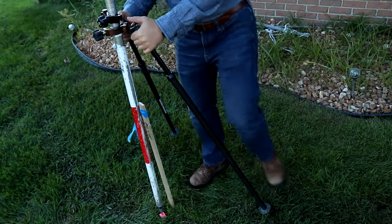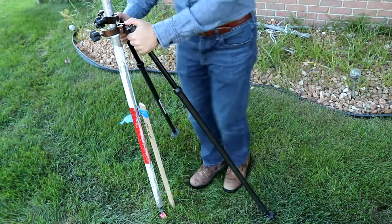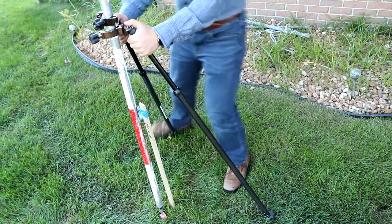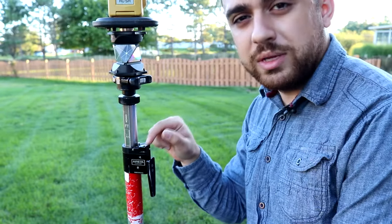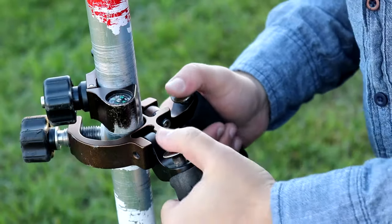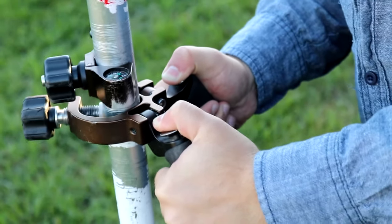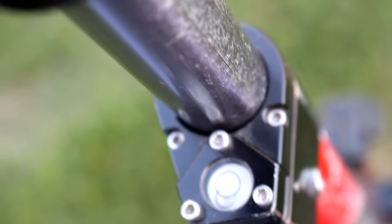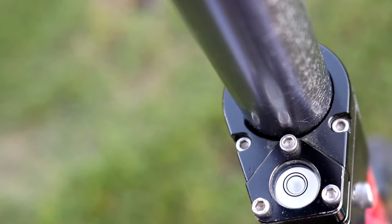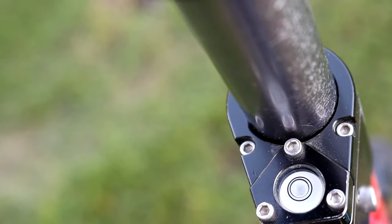First thing we're going to do is step on the legs and embed this bipod into the ground. Go ahead and make sure that this bubble is leveled. We do that by pressing down on the bipod buttons and maneuvering the rod in a way so that we finally get the bubble into the middle of the circle. Okay, perfect.